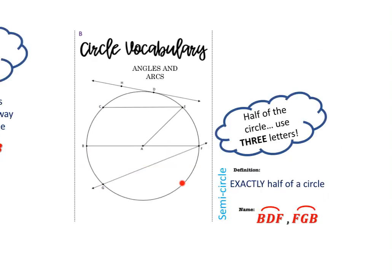The last word is semicircle. A semicircle is exactly half of a circle. Semicircles are arcs, so we use the correct arc notation. To find semicircles, look for diameters, because diameters cut circles in half, which means we'll end up with a semicircle on both sides. So BDF is a semicircle, and FGB is also considered a semicircle.